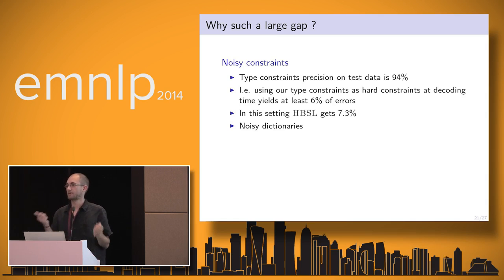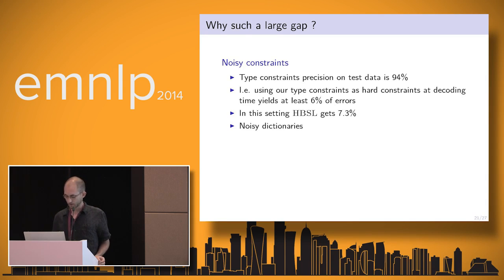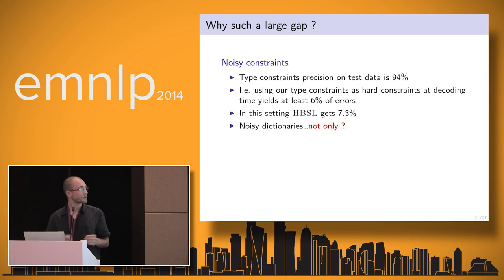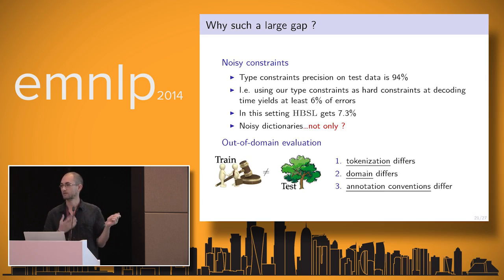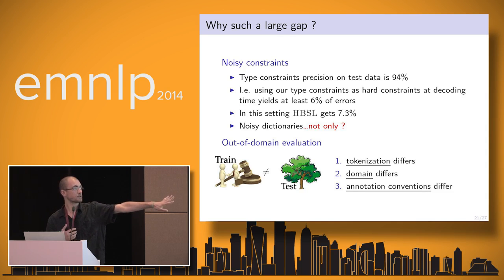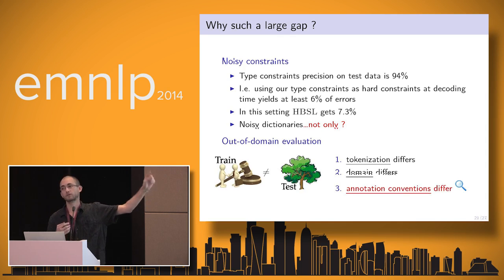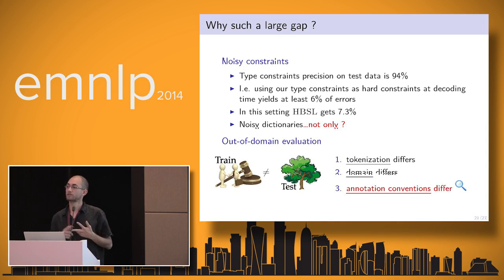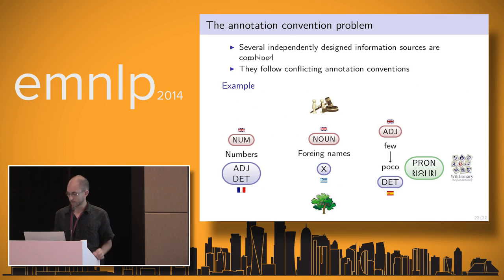The problem is that the dictionaries from Wikipedia and from the projected corpora are very noisy. But in our opinion, this is not the only cause — we are also doing out-of-domain evaluation: we train on Europarl and test on treebanks where the tokenization is different, the domain is different, and the annotation conventions are different. This last point is quite important, as we will see.